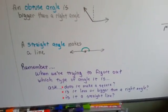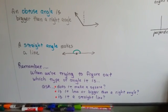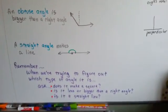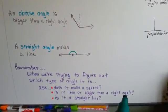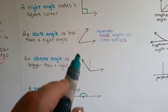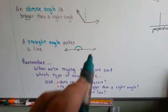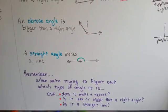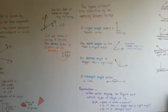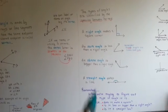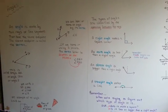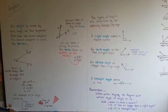So remember, when you're trying to figure out which type of angle it is, you'll ask: does it make a square? If it does, then it's a right angle. Is it less or bigger than a right angle? If it's less, it's an acute angle. If it's more, bigger, it's an obtuse angle. Is it a straight line? Well, then it's a straight angle. Those are the different types of angles, that's how they're labeled and named, and that's how you write them with a little angle sign like that. Here are the four main types of angles, the rules for why they're named that way.